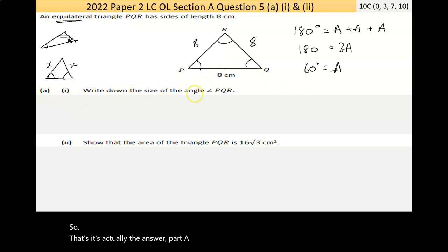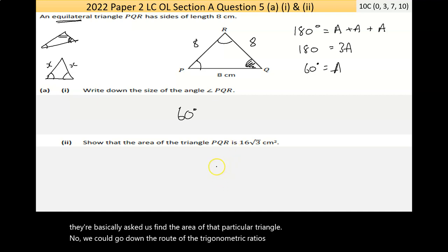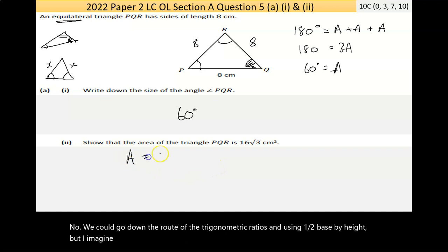So that's actually the answer. Part a, part 1 says write down the size of the angle PQR, so this one here. Well, they're all the same, so it's 60 degrees. Now part 2 says show that the area of the triangle PQR is 16 times the square root of 3. They're basically asking us find the area of that particular triangle. We could go down the route of the trigonometric ratios and using a half base by height, but I imagine the easiest formula to use is a half AB times sine of the angle.